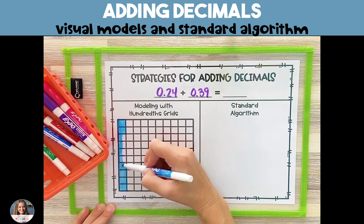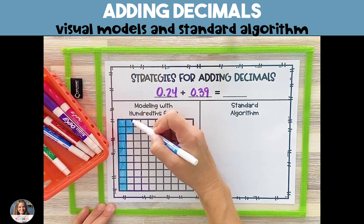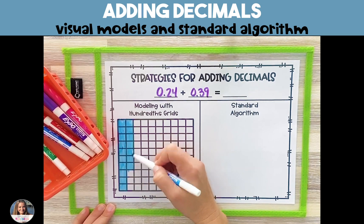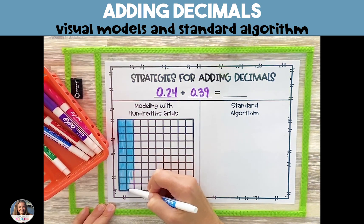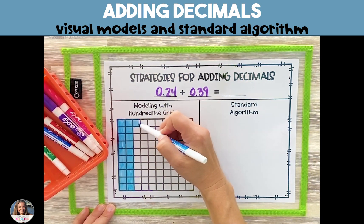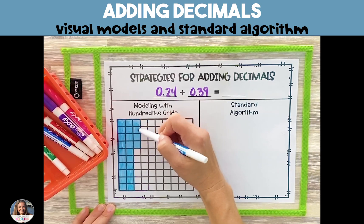To represent 24 hundredths, we're going to shade in 24 of the squares. That's two full columns of 10 and four additional squares in the third column.